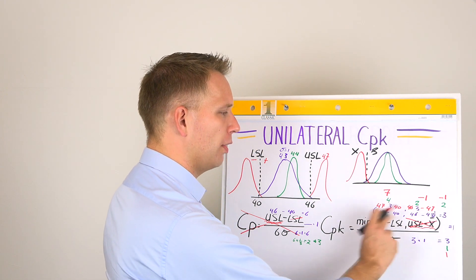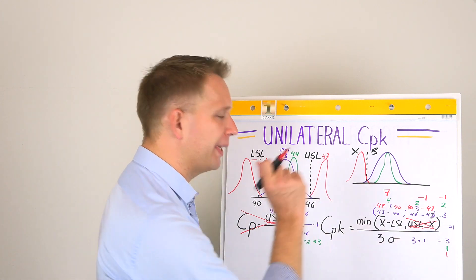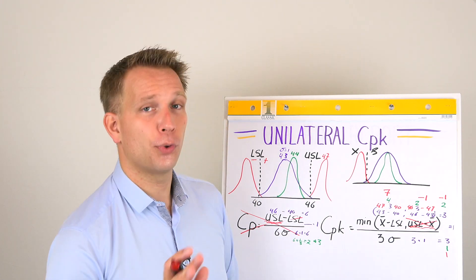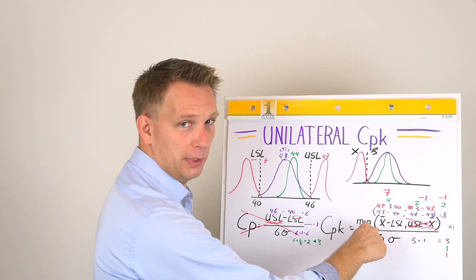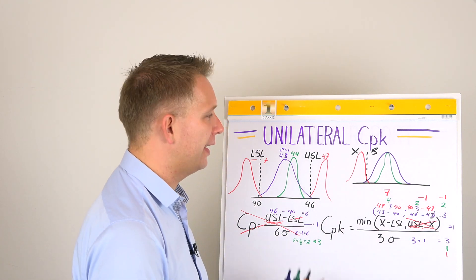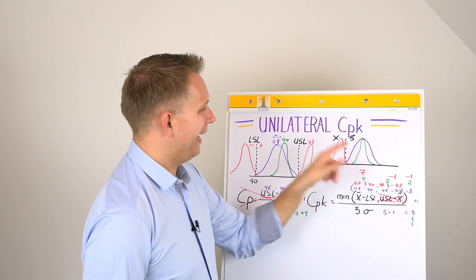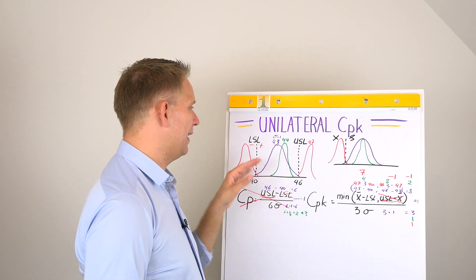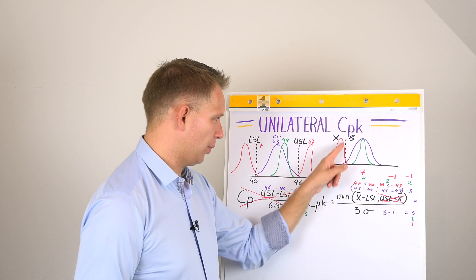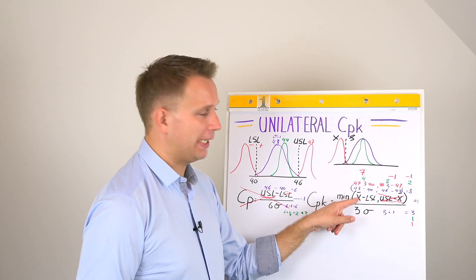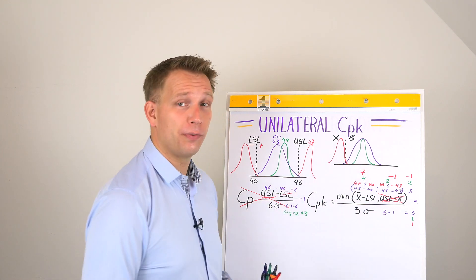Because CPK takes the lowest of the two terms, it now becomes the lowest of something we can calculate or something we cannot calculate — so the calculable term becomes de facto our CPK. If we have only an upper specification limit with no lower, this flips around. For the lower-limit-only example: we check the lower specification limit and the mean, subtract the lower spec limit from the mean to get a positive number, and divide by the standard deviation.